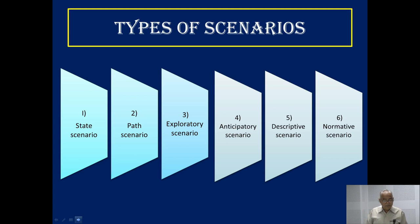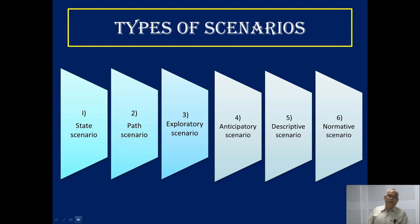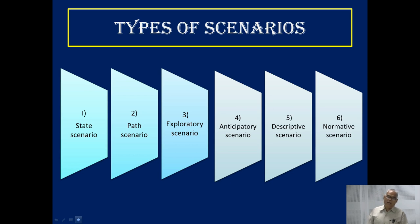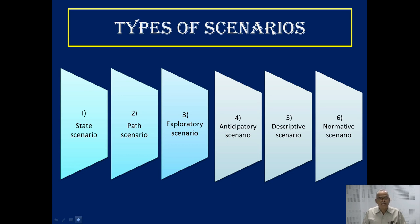When I talk about the state scenario, it says that in 2050, what will be the status of formal, non-formal, and informal learning opportunities — information and communication technology supported informal learning opportunities for people of our country. We project and describe what will happen. The path scenario states that if we want to achieve the goal of lifelong learning for all, how will we move from 2023 to 2025 to achieve that goal for all citizens of the country.